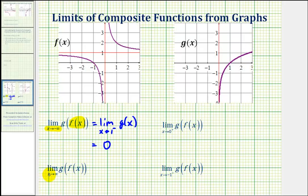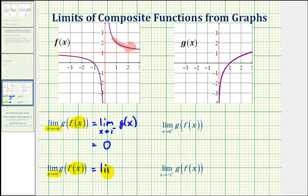Now we'll consider the limit as x approaches positive infinity of g of f of x. We'll first consider what's happening to f of x as x approaches positive infinity. As we move to the right along the graph of f, notice how we're still approaching the function value of one, but now it's going to be from the positive side of one, or from values that are greater than one. Since these function values become the inputs into function g, this is equal to the limit as x approaches positive one from the positive side of g of x.